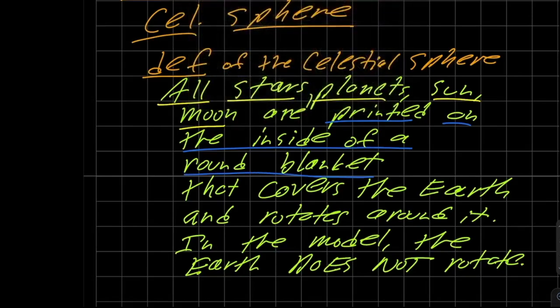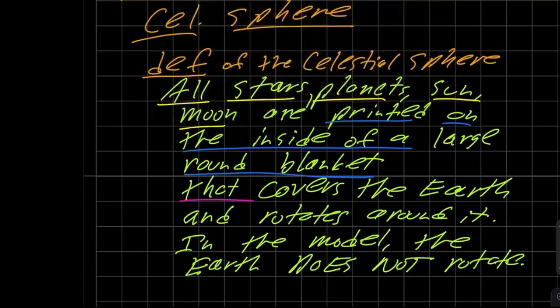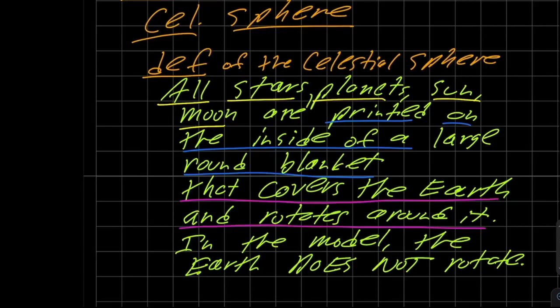I should probably go and add the word large in here. Large blanket. And what's this blanket going to do? It's going to cover the earth and rotate around it. And lastly, in the model we see here that we're going to say that in this model, the earth does not rotate.